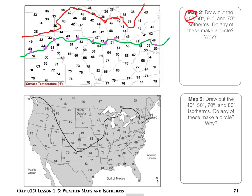One last one — I'll do a couple of points with 60 degrees and then leave you to it. In blue: between 52 and 69, there definitely has to be a 60; between 52 and 66, definitely a 60; between 52 and 70 all the way on the left, definitely a 60; between 51 and 65, a 60. As I start drawing the 60-degree isotherm through these points, I'll have you continue and do the rest on your own.